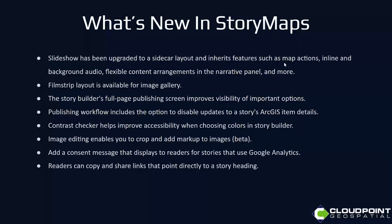A few things new in Story Maps: slideshow has been upgraded to a sidecar layout and inherits features such as map actions, inline and background audio, flexible content arrangements in the narrative panel, and more. Film strip layout is now available for image gallery. The story builder full-page publishing screen improves visibility of important options, including the option to disable updates to a story's ArcGIS item details. There's also a contrast checker to improve accessibility when choosing colors, image editing to crop and add markups to images (beta only), and a consent message for stories using Google Analytics.